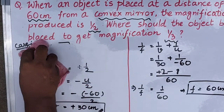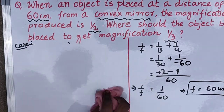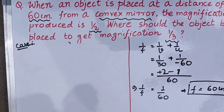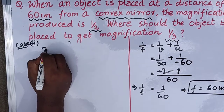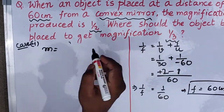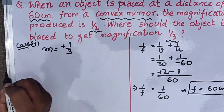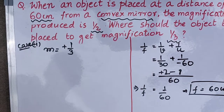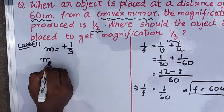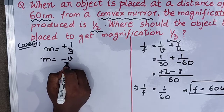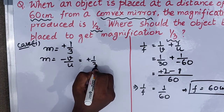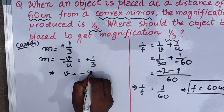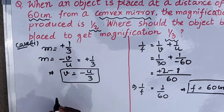Now let's look at case 2. Here we need to find the value of u. In case 2, the magnification is going to be plus 1 by 3. Using the magnification formula: m equals minus v by u equals plus 1 by 3. Rearranging, v is equal to minus u by 3. Therefore, 1 by v equals minus 3 by u. This is our relation.